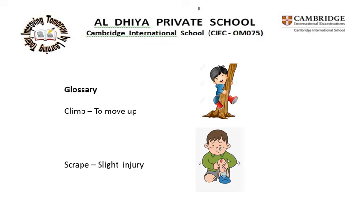Now we have the glossary — difficult words. Here we have two words: climb and scrape. Climb means to move up. You can see in the picture the boy is climbing up the tree — he is moving up. Scrape means a slight injury. Look at the picture — the boy has scraped his knees and he is crying. It is a slight injury.